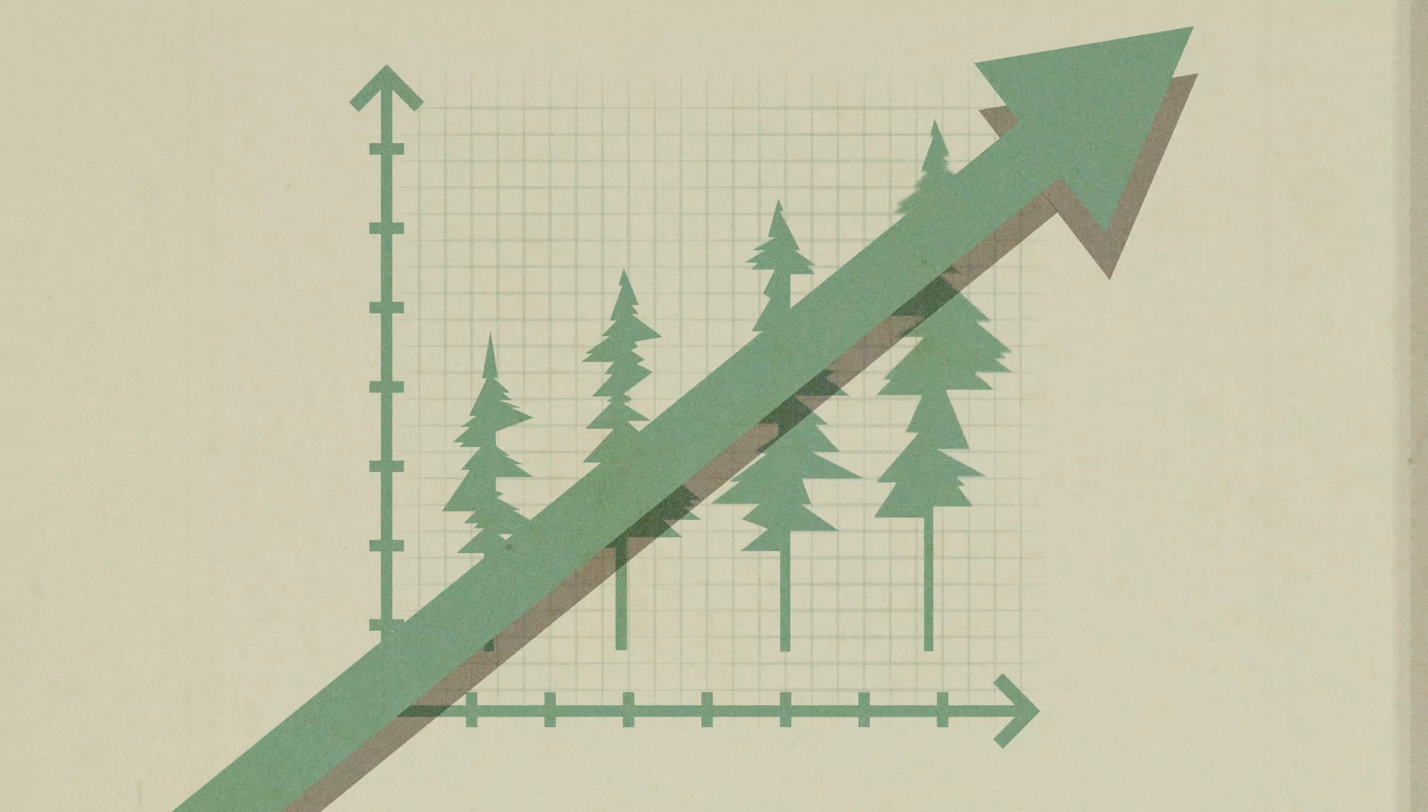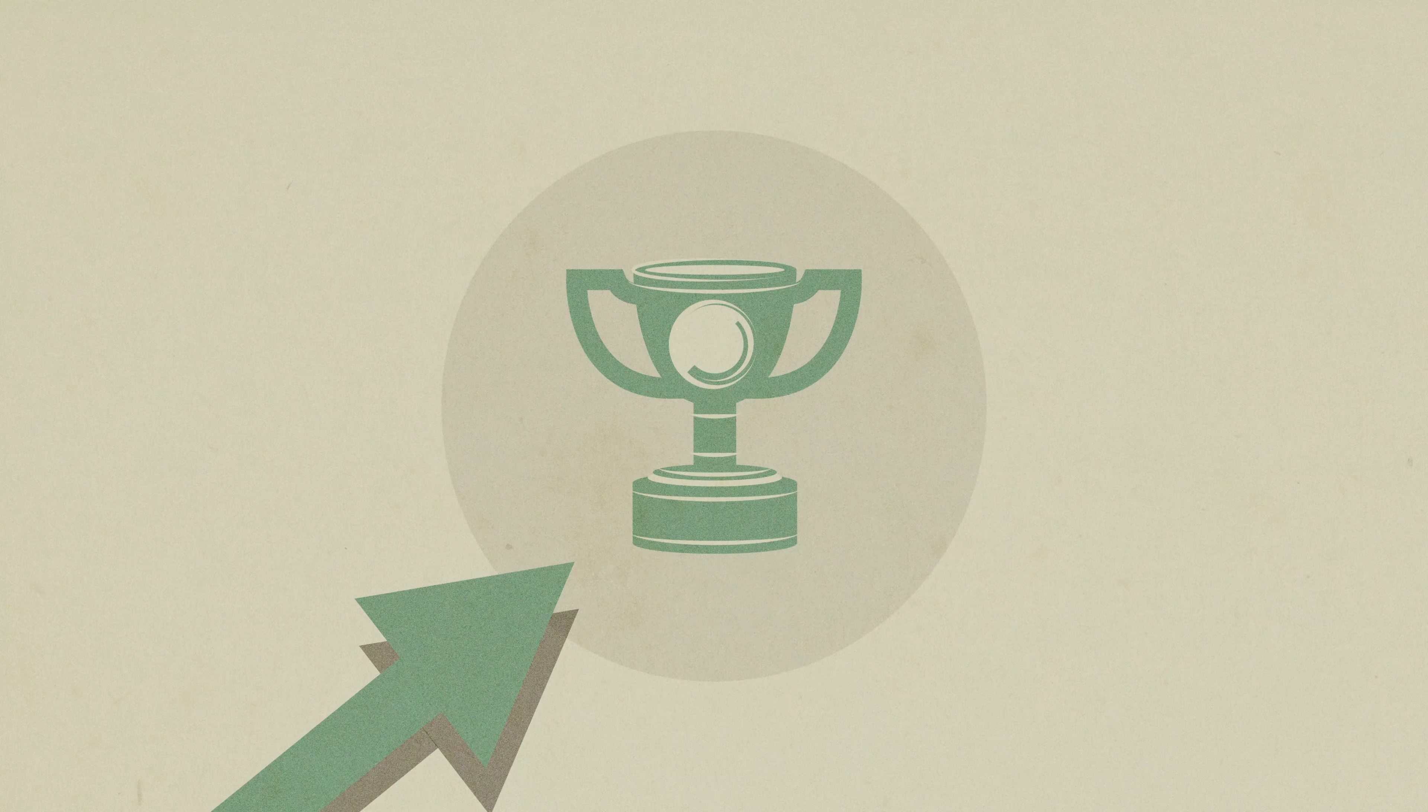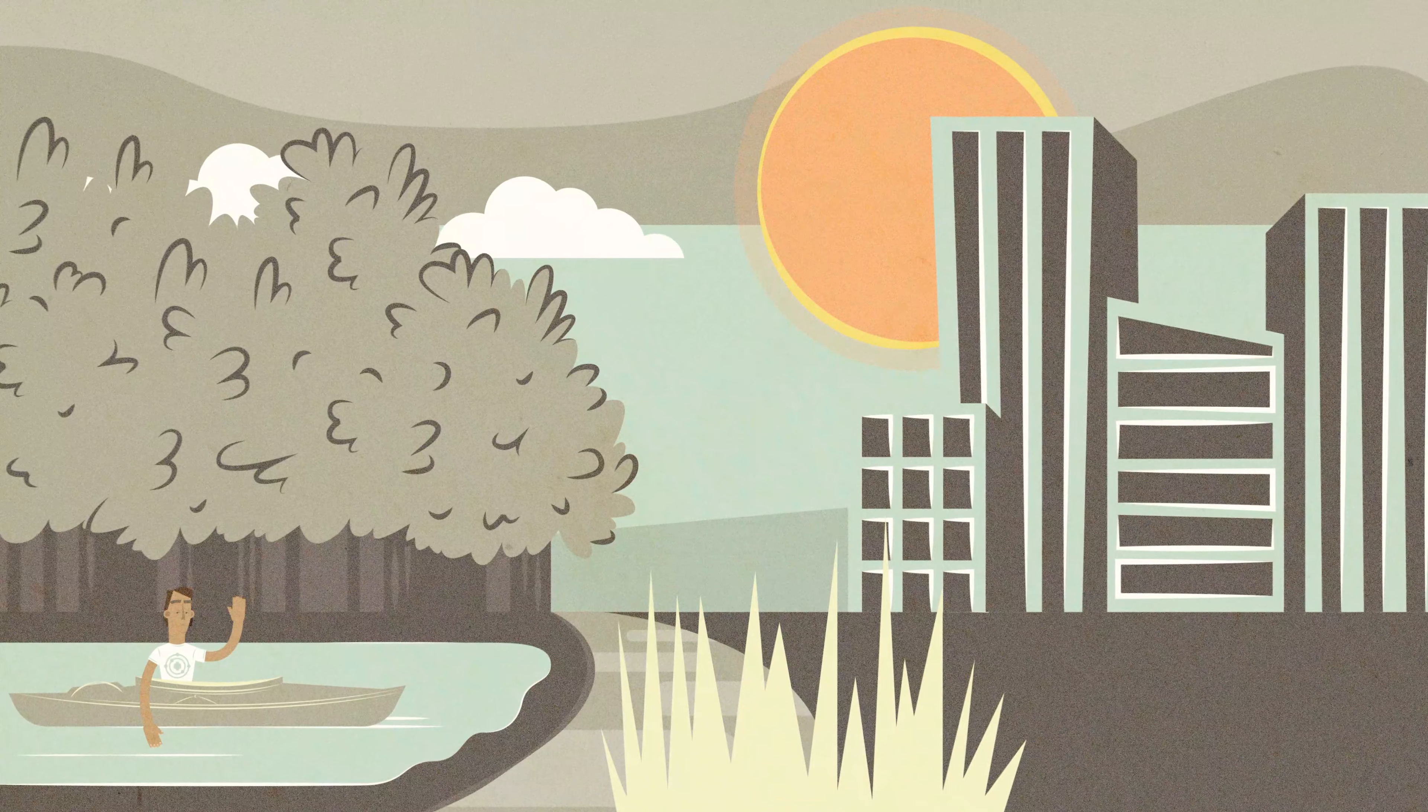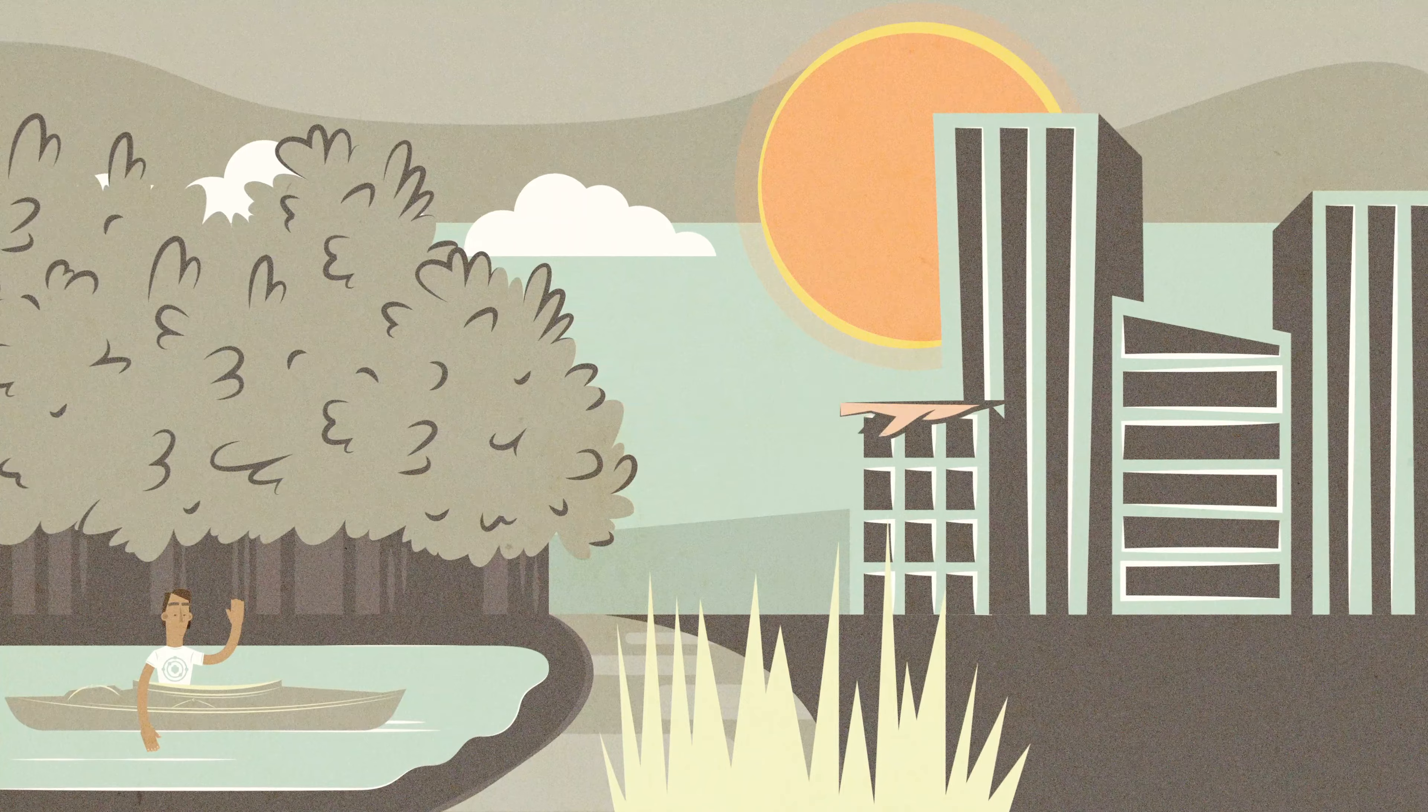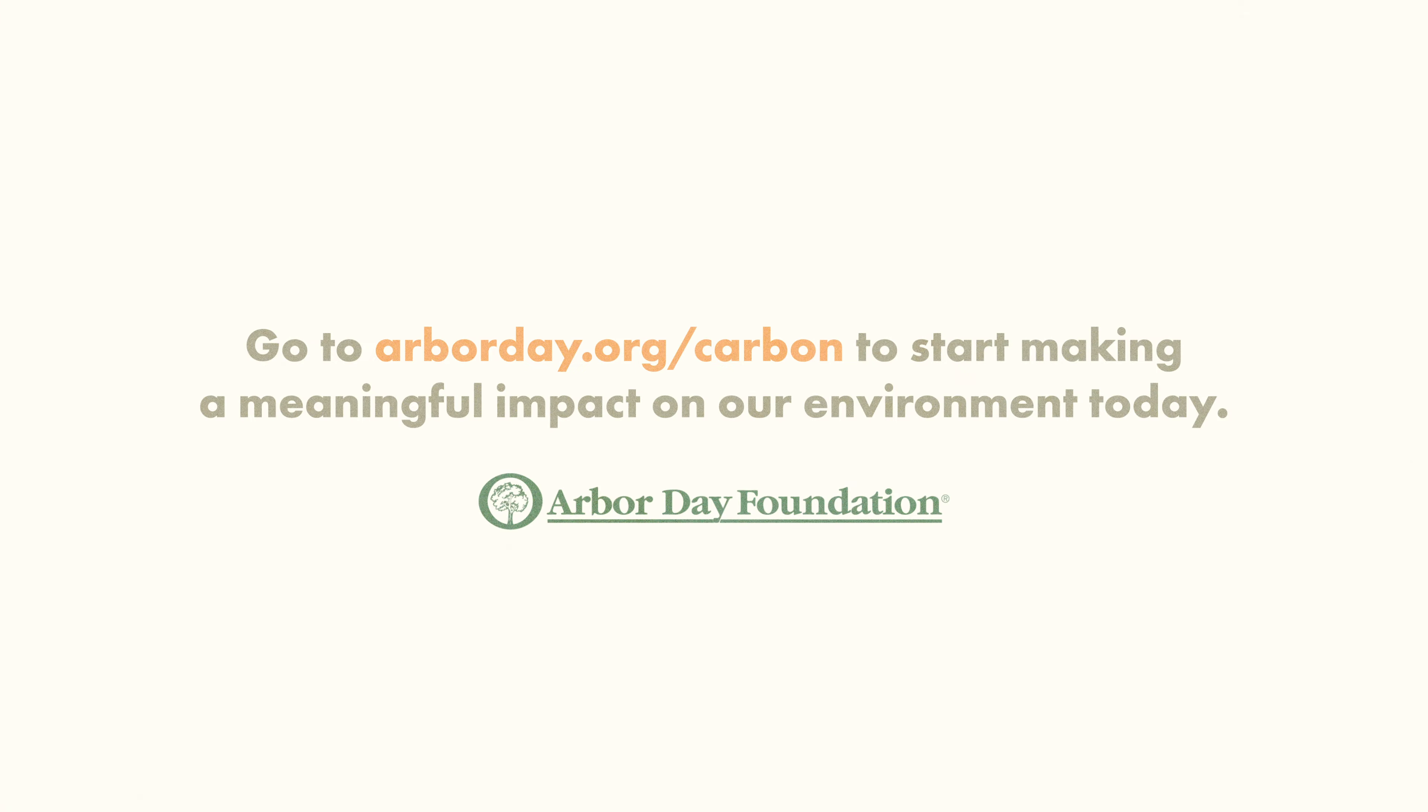One of the simplest and most effective solutions to this complex problem is also all around us. Trees. Trees act as a natural filtration system that can help return the balance to normal. But it's going to take an effort from all of us to ensure enough trees are protected and planted to make this a reality.